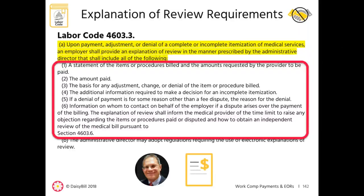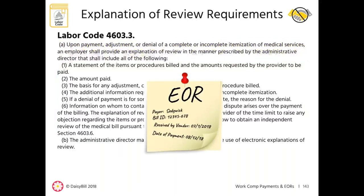The six required items in an EOR for a medical-legal bill are: (1) an itemization of the billed procedure codes, (2) the amount paid, (3) the reason for any adjustment, change, or denial, (4) if the bill is denied, the reason for the denial, (5) if the bill is incomplete, the necessary additional information, and (6) contact information if the bill is contested. Just like an EOR for medical treatment, as long as all required information is included, the EOR can be in any form or format.